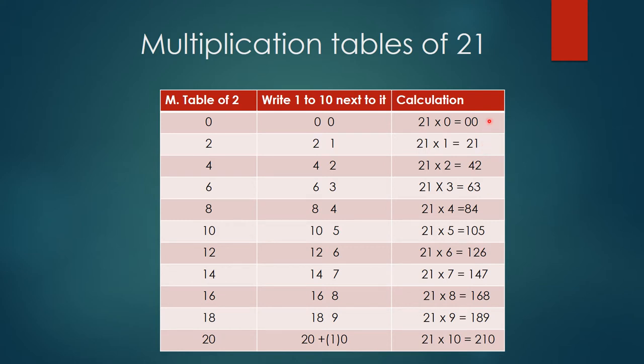21 zeros are 0, 21 ones are 21, 21 twos are 42, 21 threes are 63, 21 fours are 84, 21 fives are 105, 21 sixes are 126, 21 sevens are 147, 21 eights are 168, 21 nines are 189, and 21 tens are 210.